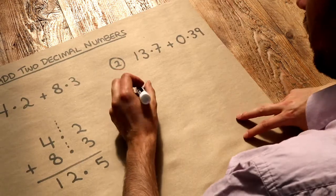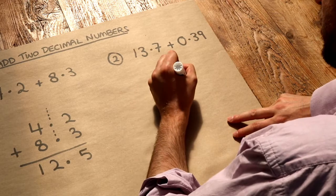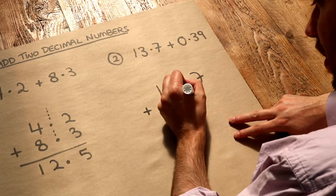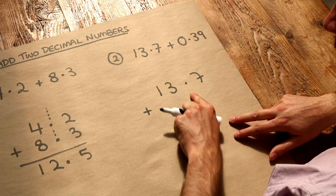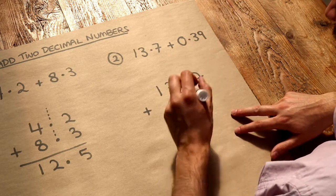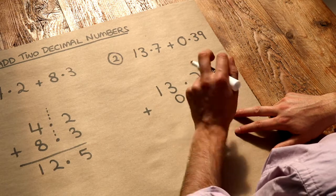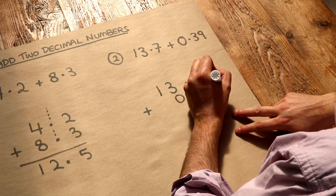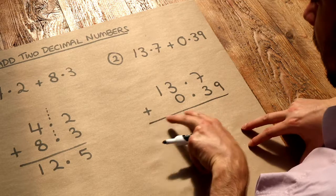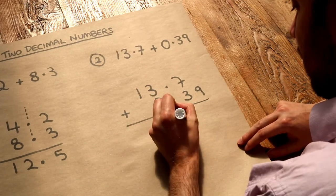What about this one? We've got 13.7 plus—again I'm going to put this decimal point vertically aligned—and then we've got 0.39. So we've got 0 as the units digit here, 0.39, and again I'm going to put the decimal point in the result in the same vertical line.